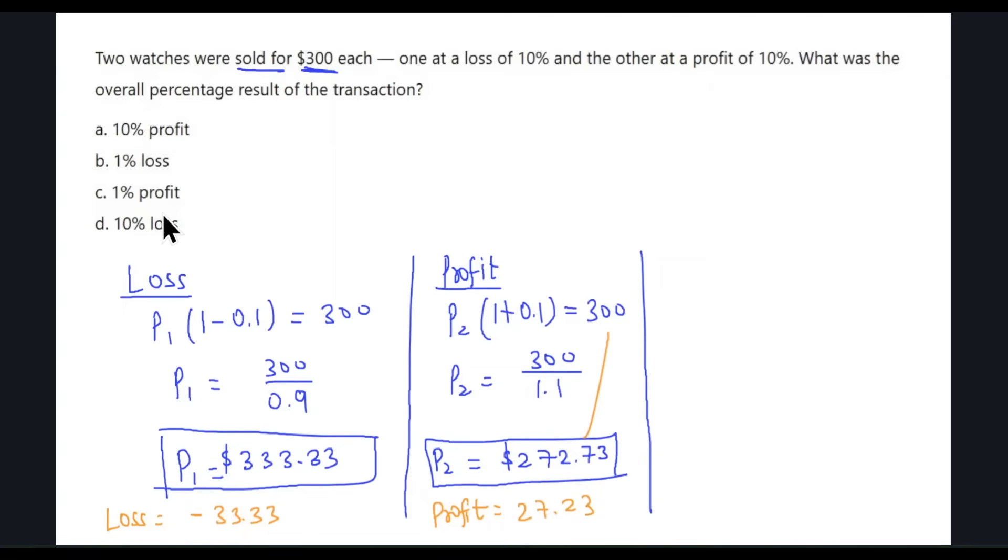To find the overall profit or loss, we first need to find what is the overall profit or loss. Overall, there is a loss, definitely, because loss is more. That's going to be negative $33.33 plus $27.23, which comes out as negative $6.1.